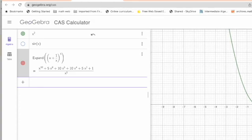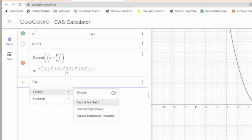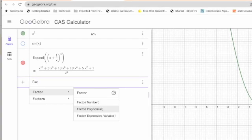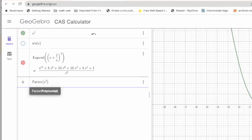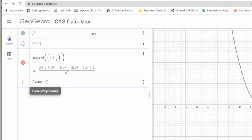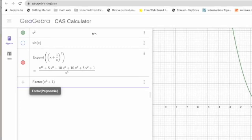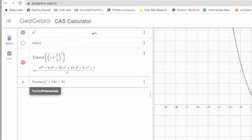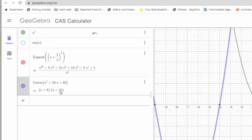You can also factor. So if you choose first option, factor, and then second option from here, factor polynomial, you can enter the polynomial as you can say x squared plus, let's say, 14x plus 40. Look, so you can see two factors, x plus 4 and x plus 10.